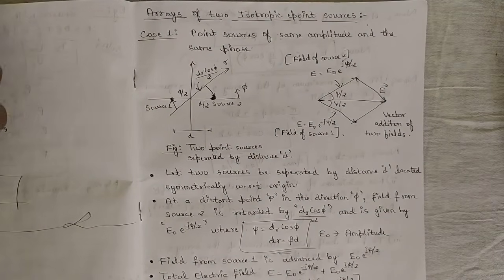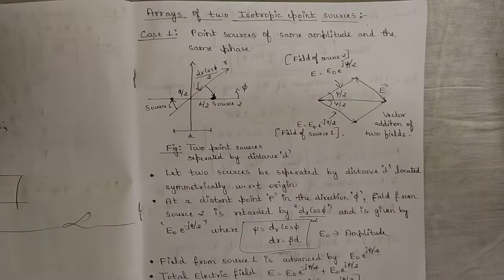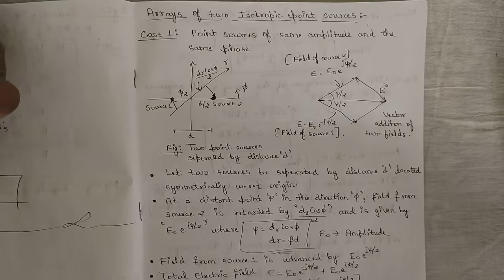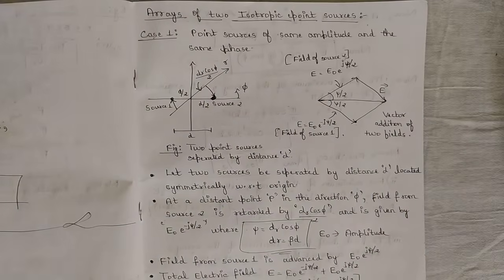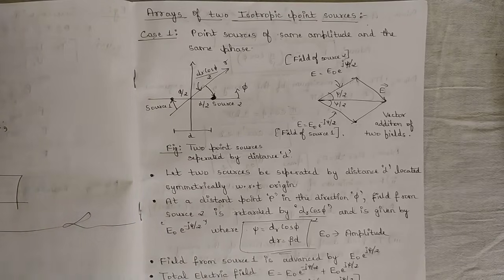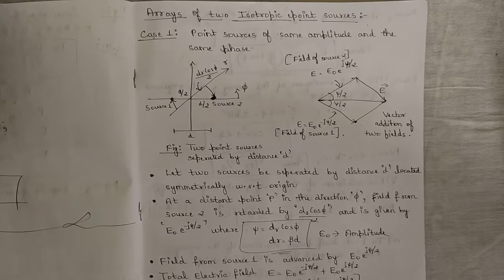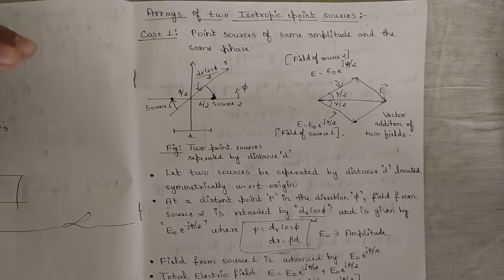Hello everyone, welcome to this new video. In my previous video we solved four important problems related to radiation intensity and gain. Those problems are very important — you can expect one or two of them in exams. We have a few concepts left in module four. Whatever we have discussed so far covers the basics: short electric dipole radiation, radiation resistance, point sources, power pattern, power theorem, and radiation intensity.